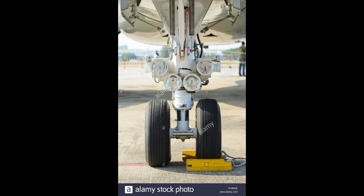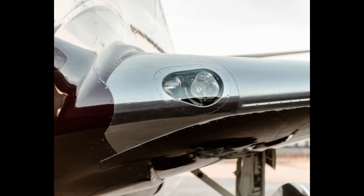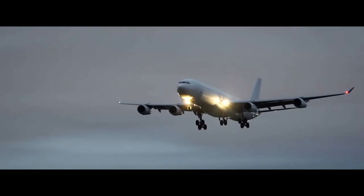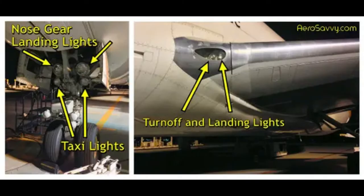Depending upon the region, landing lights are either switched on when entering the active runway or upon receiving takeoff clearance. Landing lights are normally turned off as the aircraft climbs through 10,000 feet and are turned on again as it descends through 10,000 feet on approach.